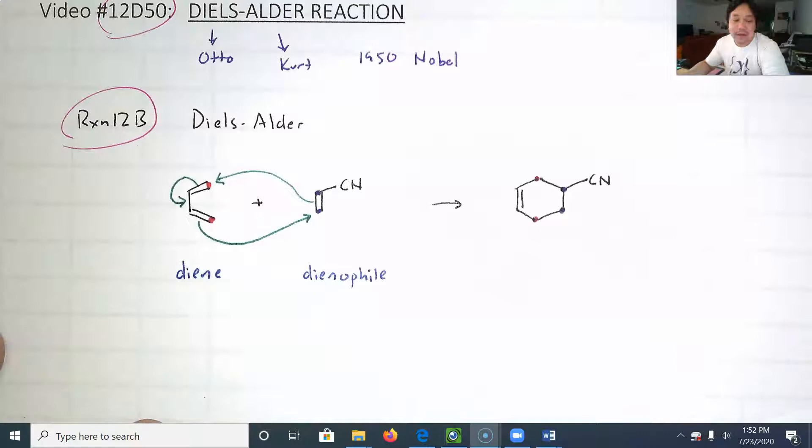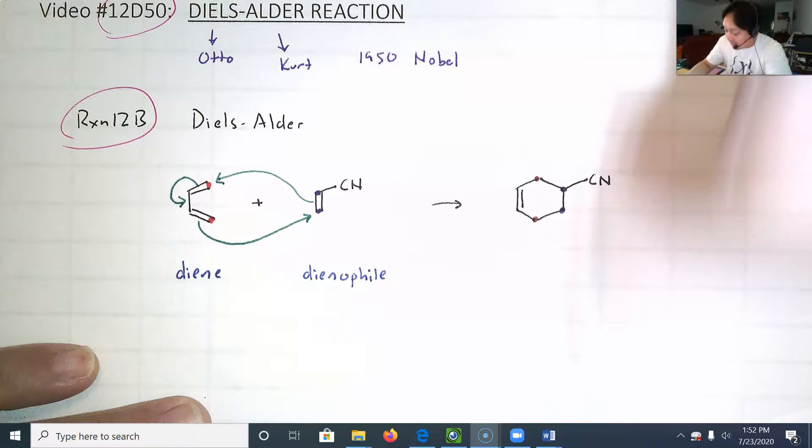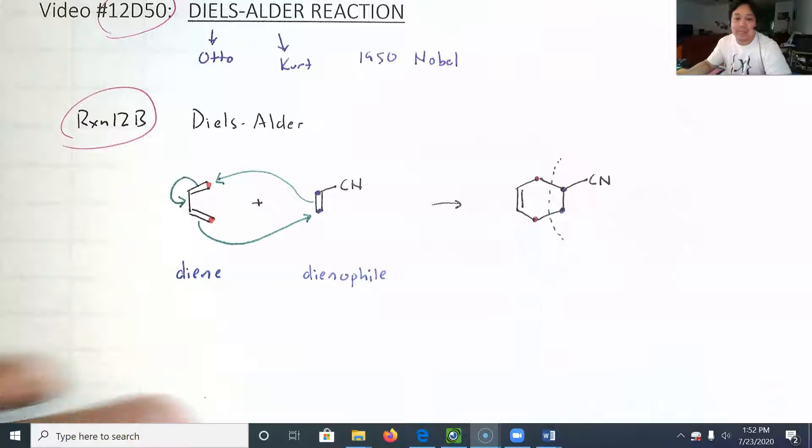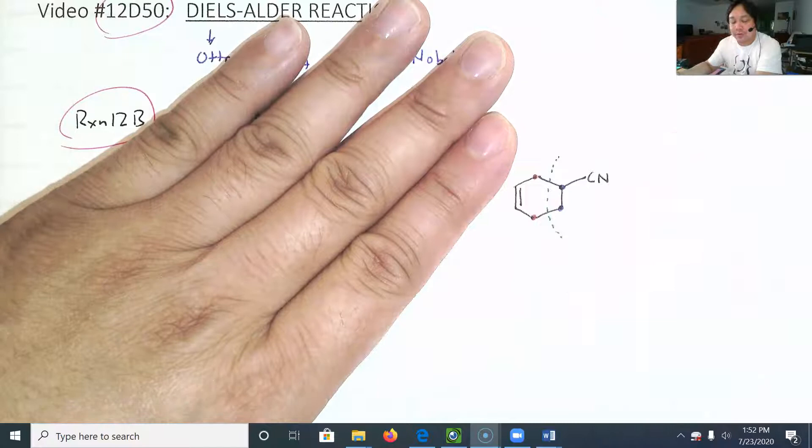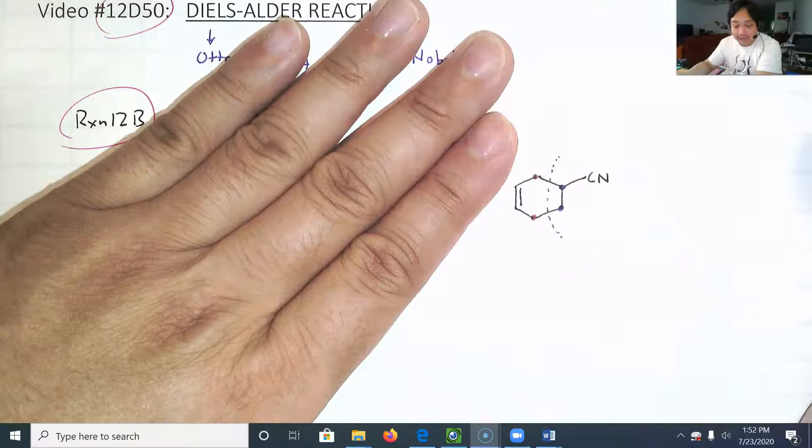If you think about what was made, these are your two molecules. There will be a problem where you have to go backwards and tell me, based on this molecule, what was the original diene and what was the original dienophile.